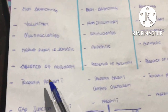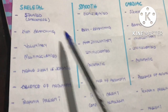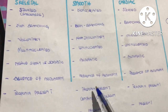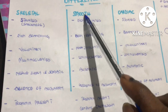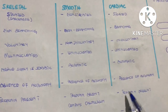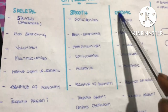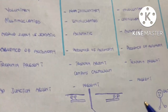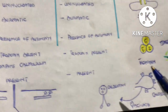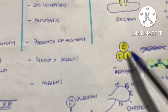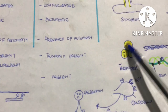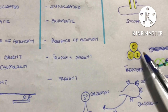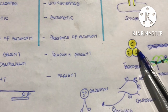Troponin is present in skeletal muscle, absent in smooth muscle, and present in cardiac muscle. Troponin consists of three subunits: troponin C, troponin T, and troponin I.